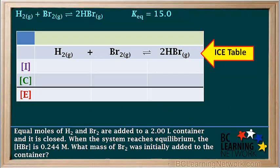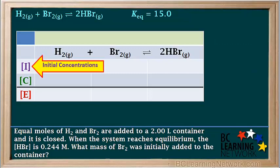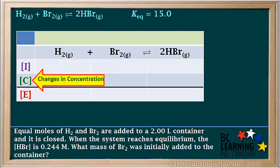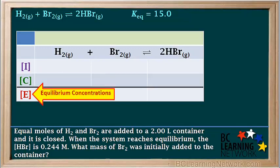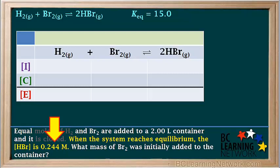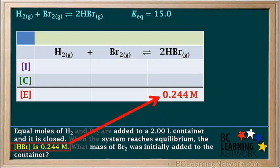Before we find the mass of Br2 initially added, we will find the initial concentration of Br2. This can be done with the help of an ICE table, or ICE box as some teachers call it. Notice the balanced equilibrium equation is added to the second horizontal row of this table, and everything is lined up so that each species has its own vertical column. I in square brackets stands for initial concentration, C in square brackets stands for changes in concentration as the reaction proceeds from an initial state to equilibrium, and E in square brackets stands for the equilibrium concentration of the species. The unit M for molarity can be dropped in ICE tables, as the square brackets around I, C, and E mean that all quantities are molar concentrations.